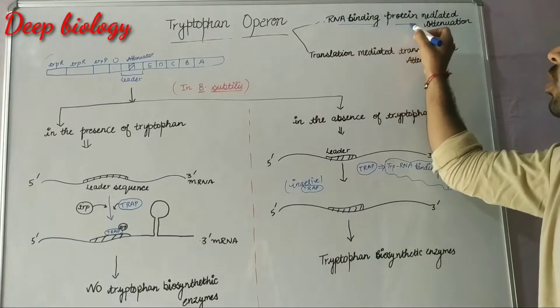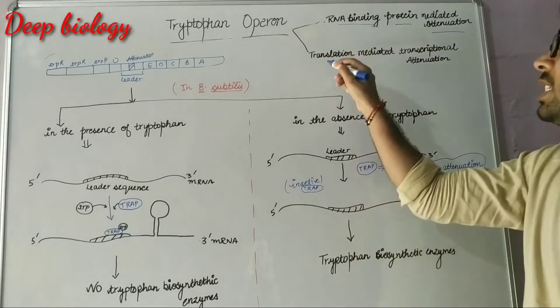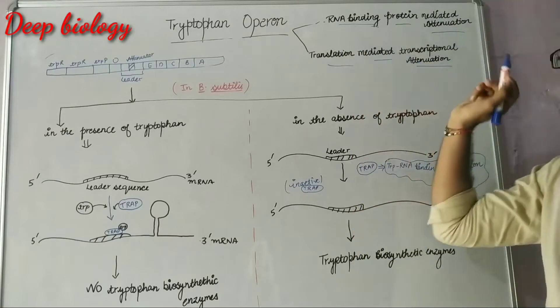The first one is RNA binding protein mediated attenuation, and the second one is translation mediated transcriptional attenuation.